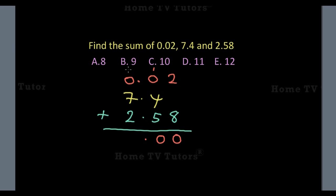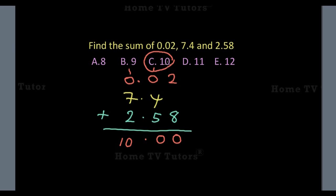We bring down the decimal point, then carry 1 to the third column. In the third column now, we have 1 plus 7 plus 2, which gives us 10. The answer option C is the right answer.